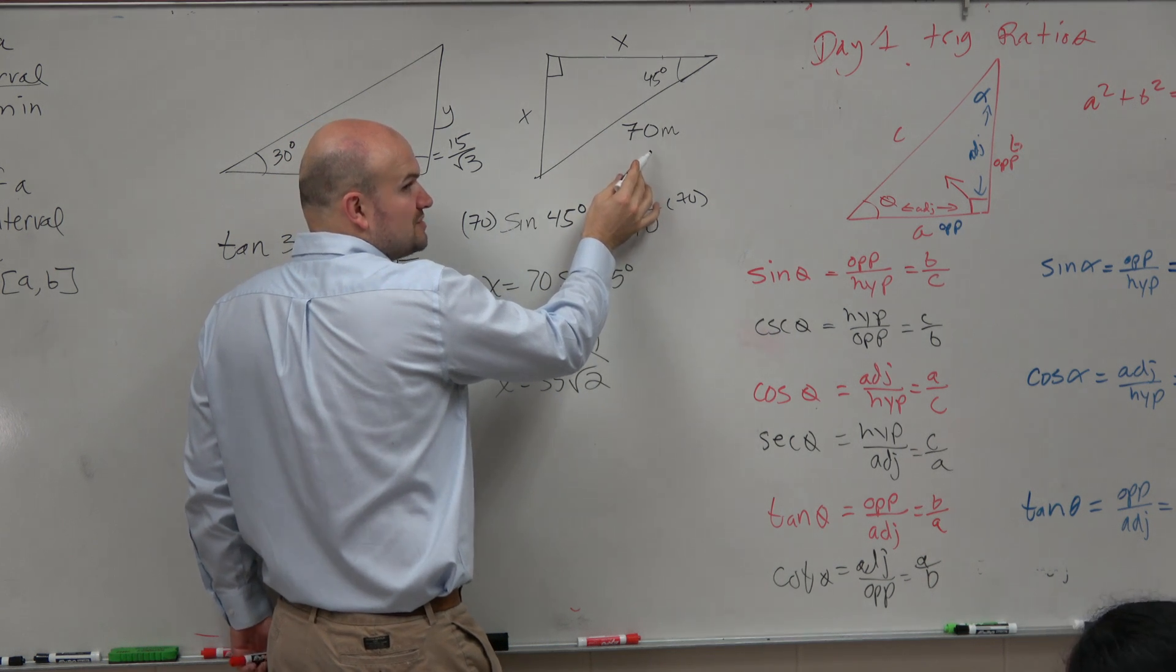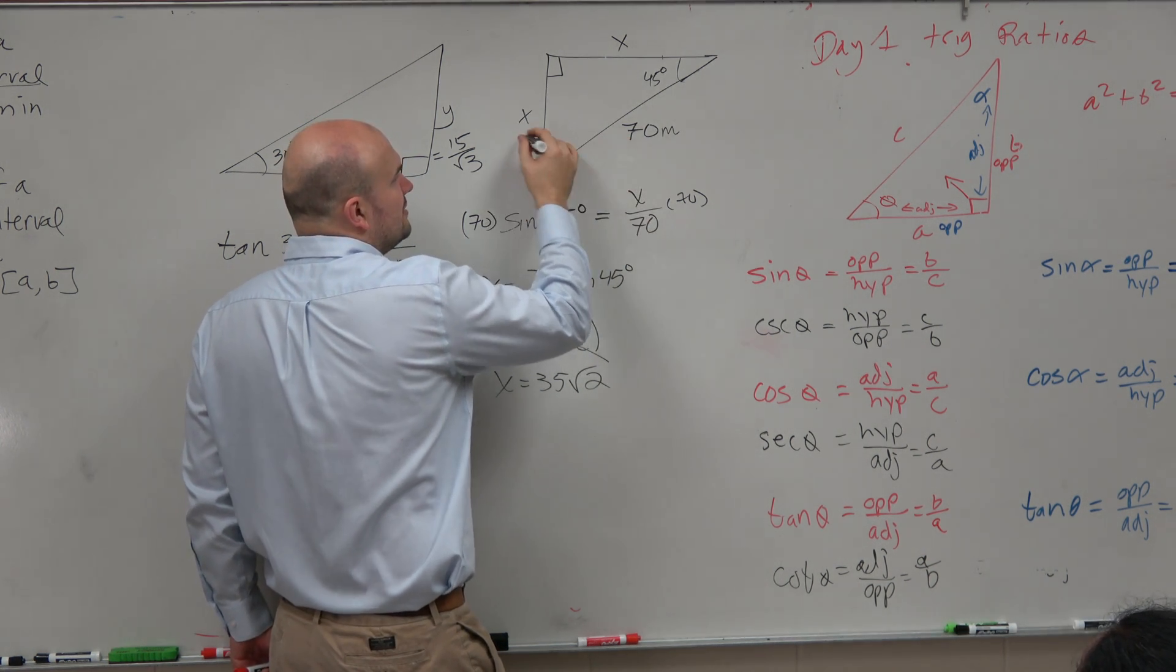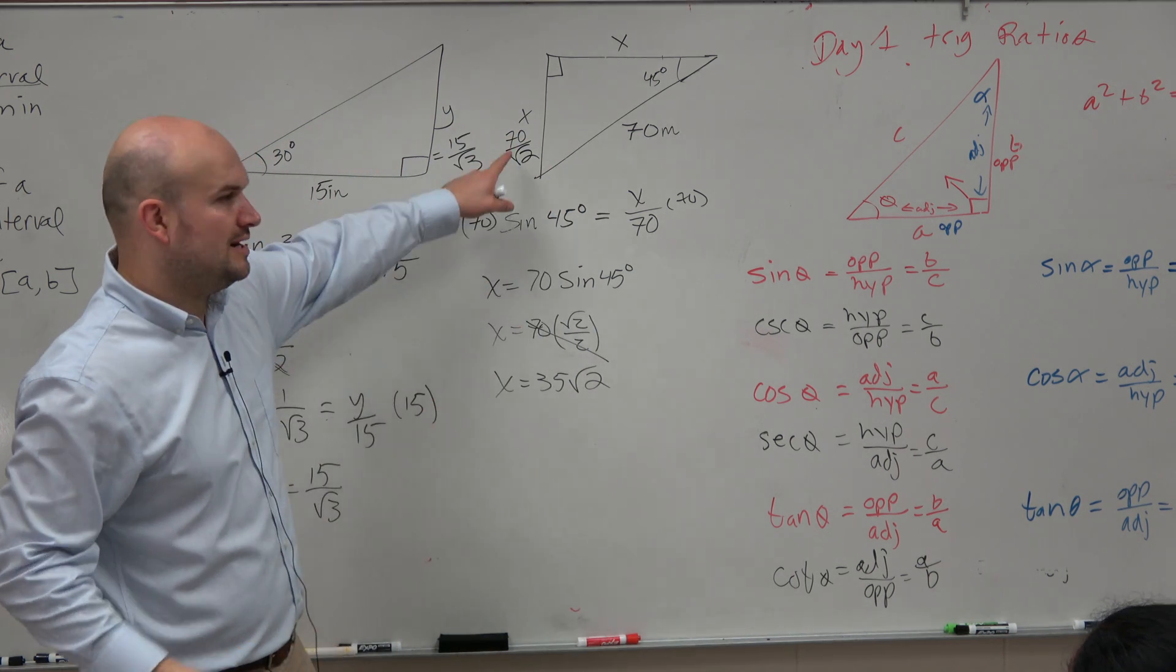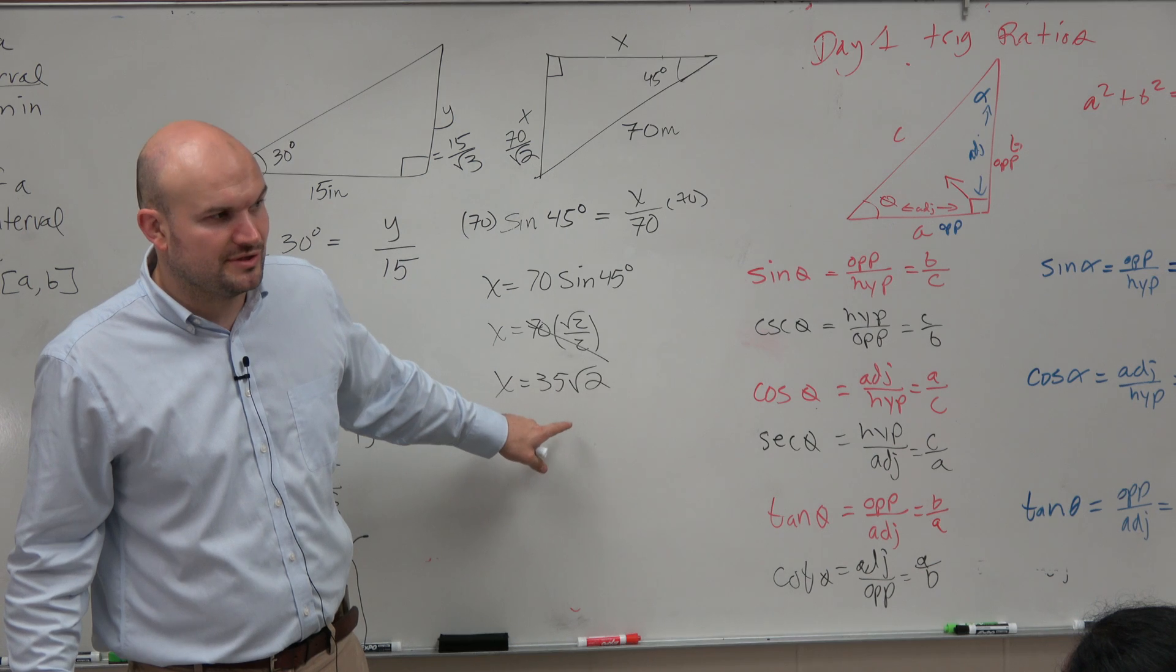To get to here, I multiply by the square root of 2. Here, to get to here, I would divide by the square root of 2. And if you rationalize the denominator here, you would still get the same answer of 35 times the square root of 2.